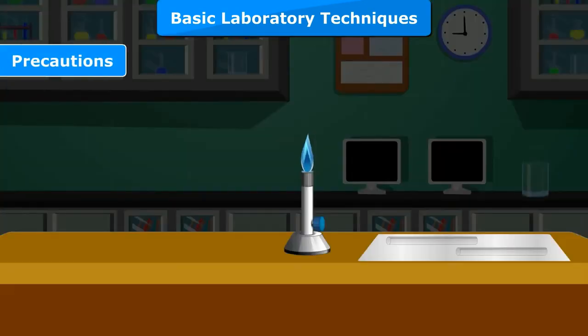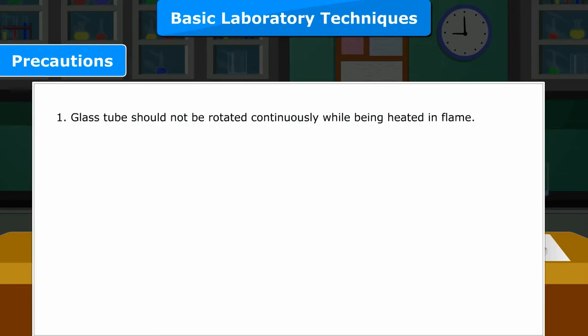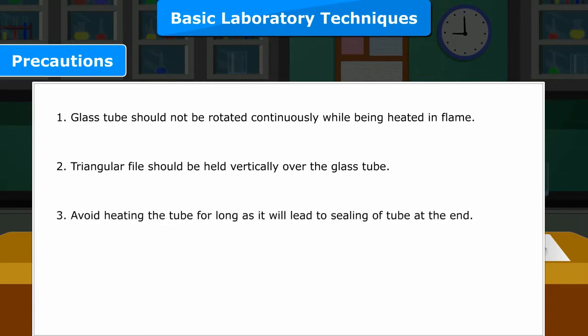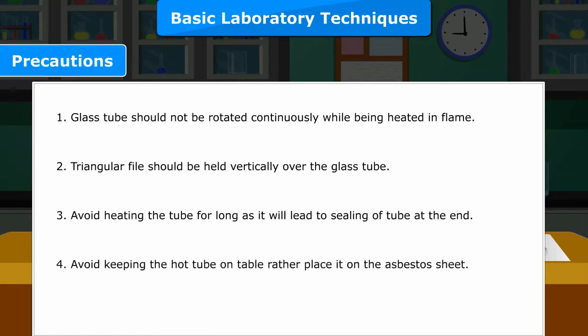Precautions: 1. Glass tube should not be rotated continuously while being heated in the flame. 2. Triangular file should be held vertically over the glass tube. 3. Avoid heating the tube for long as it will lead to sealing of the tube at the end. 4. Avoid keeping the hot tube on the table; rather place it on the asbestos sheet.